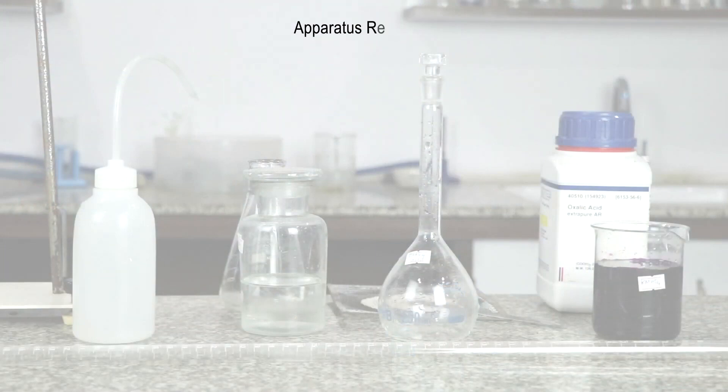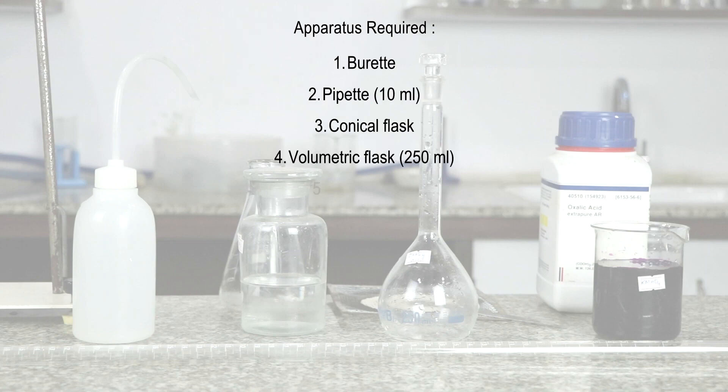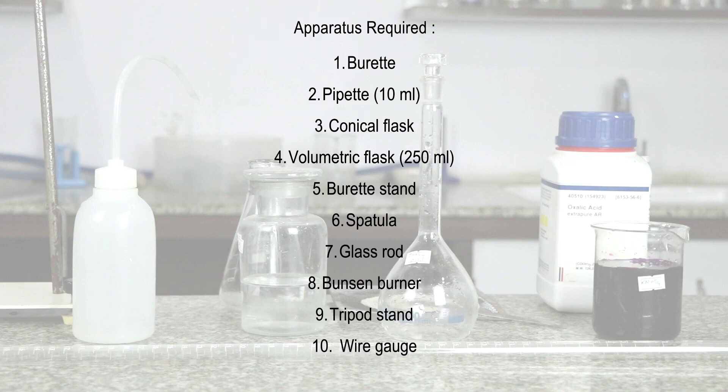The apparatus required are burette, 10 ml pipette, conical flask, 250 ml volumetric flask, burette stand, spatula, glass rod, Bunsen burner, tripod stand, and wire gauge.